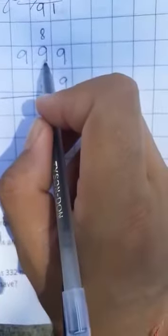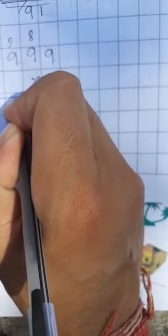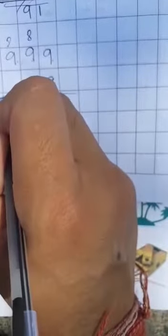Write 9 times 999. 9 nines are 81, write 1 here and 8 will carry up. Got it? See, 9 nines are 81, plus 8 is 89, carry the 8. 9 nines are 81, plus 8 is 89. Got it? Hope you understood it.